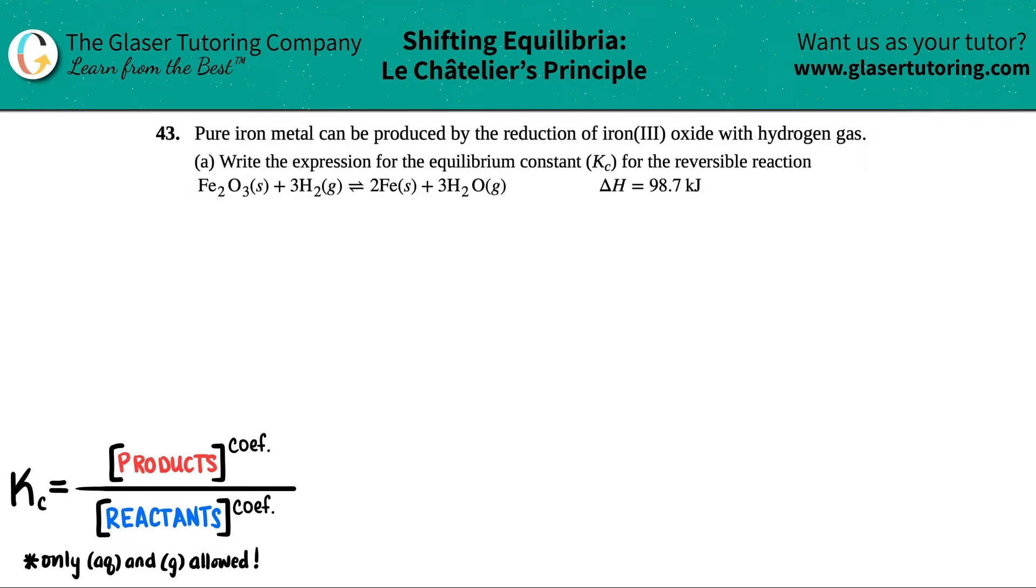Number 43: Pure iron metal can be produced by the reduction of iron(III) oxide with hydrogen gas. We have letter A, so we need to write the expression for the equilibrium constant, which is Kc, for the reversible reaction. We have the reaction here and they give us the delta H value. The first thing I'm going to do is rewrite this equation a little bit bigger so that we can work with it.